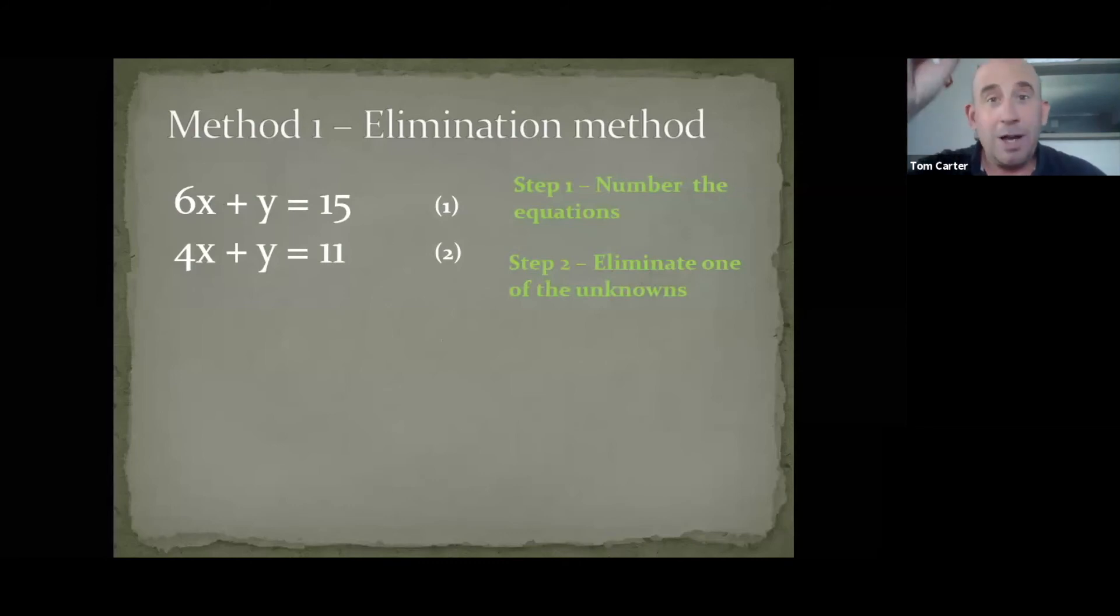And because I've got a y above and a y below, essentially, if I do one take the other, so the top line, the top equation, take away the bottom one, I'll do my x's first of all. So, 6x take away 4x gives me 2x.